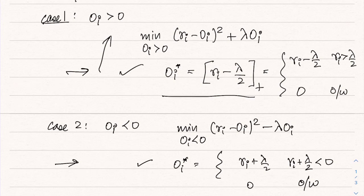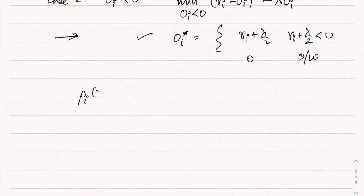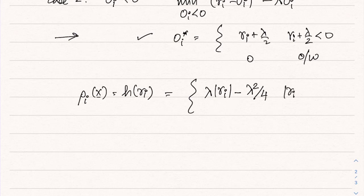So if we substitute it back, we would obtain rho_i of X which if you can remember is H of r_i equal to lambda absolute value of r_i minus lambda squared by 4 whenever absolute value of r_i is greater than lambda by 2, and r_i squared when absolute value of r_i is less than equal to lambda by 2. So this is exactly the Huber function for a specific case where basically you have to take M equal to lambda by 2. So this is basically H of lambda by 2 of r_i.